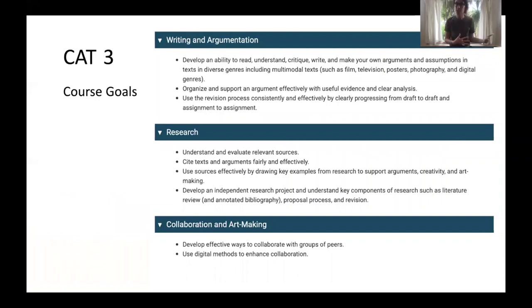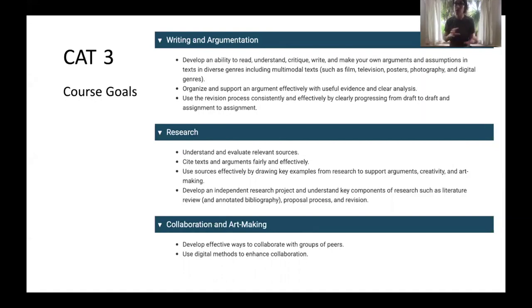CAT 3 builds on skills developed in CAT 1 and CAT 2 around writing, argumentation, and independent research. We apply the citation practices learned in CAT 2 to independent research projects. You'll also be working collaboratively in group projects. One of the major goals — tying into the art ethic of the Culture, Art and Technology program — is art making. We'll be asking how research works in a creative process, how we collaborate, and how we build interpersonal communication skills and make arguments kindly and ethically to group members, as we imagine different, better futures.